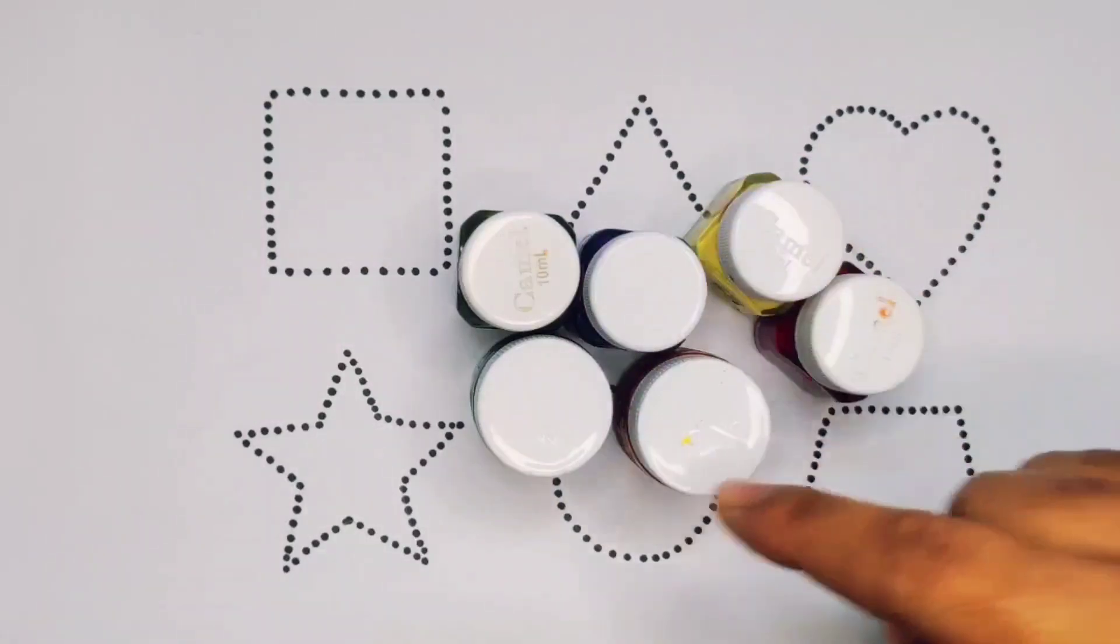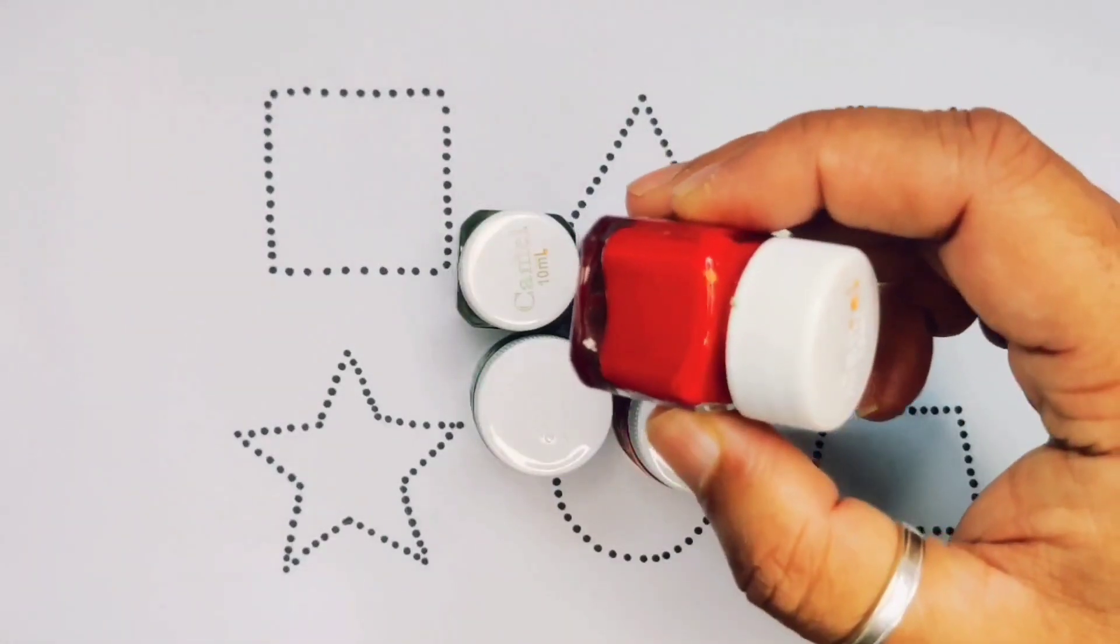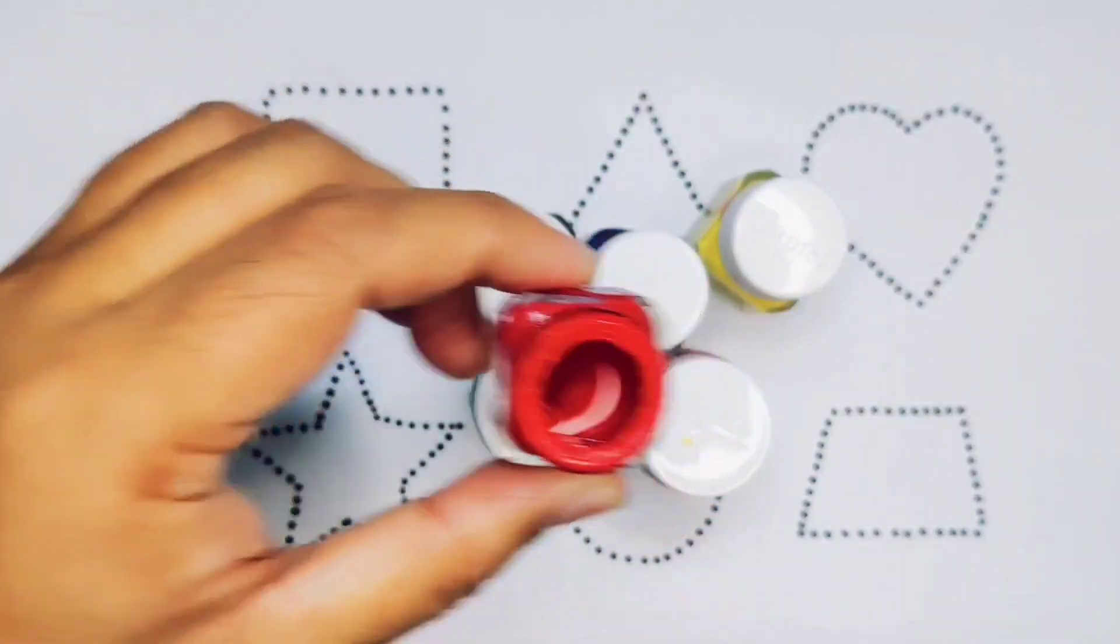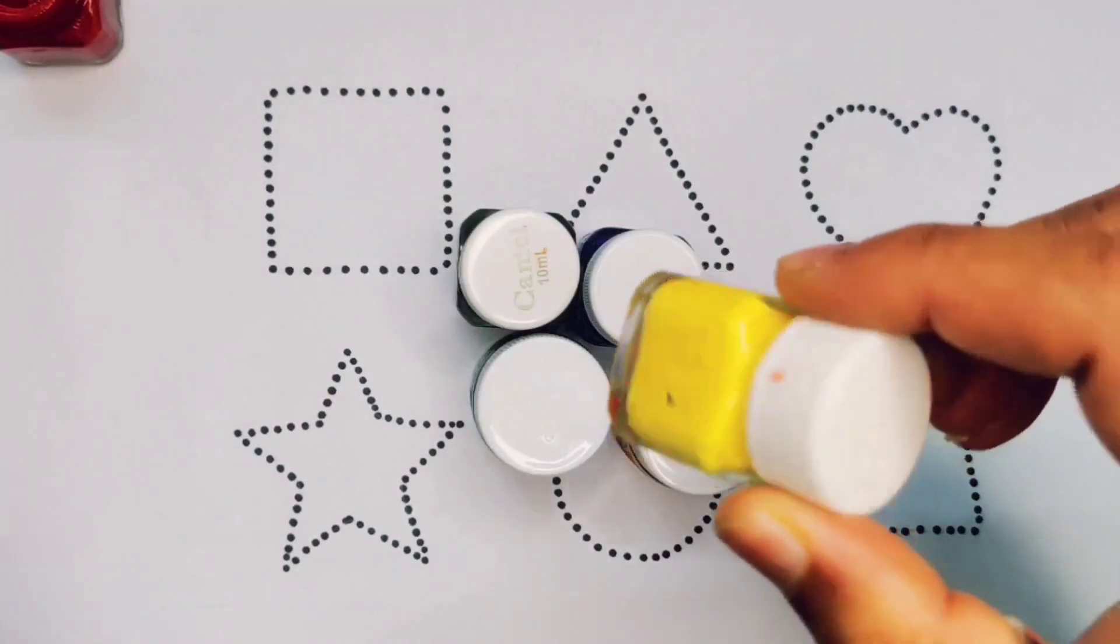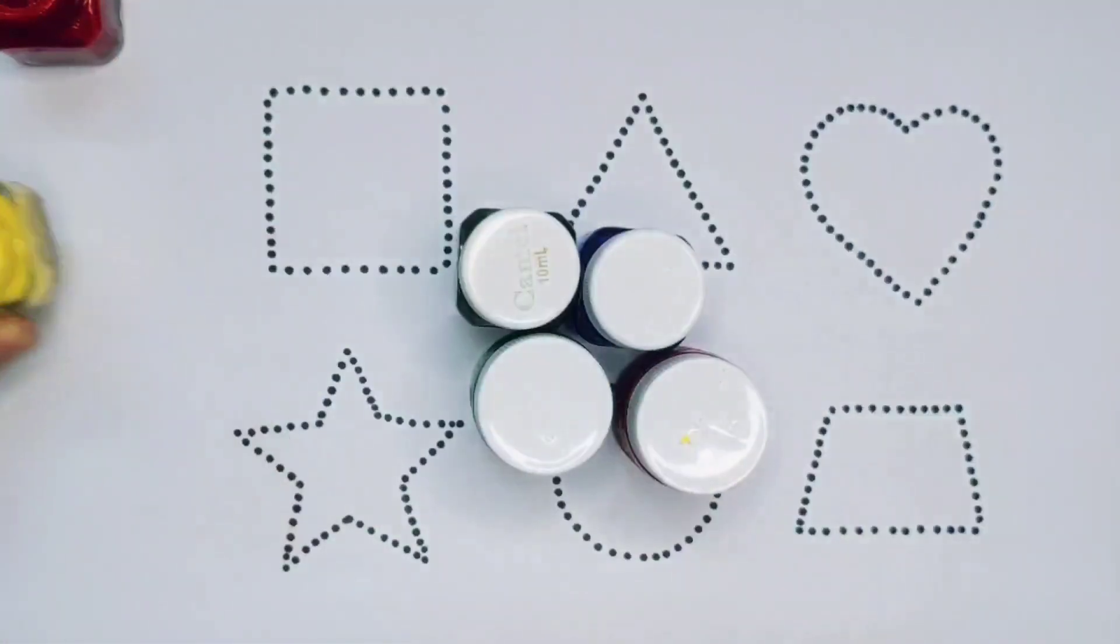First we are going to know the colors name. Red color. This is red color. Yellow color. This is yellow color.